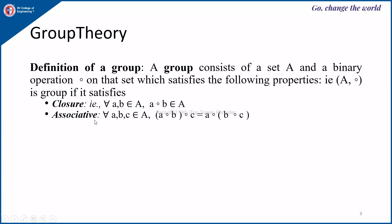Next, associativity: if you take a, b, c which belong to the set A, then (a composition b) composition c should be equal to a composition (b composition c), which states that the order of the operation does not matter when you are performing the operation on three elements.